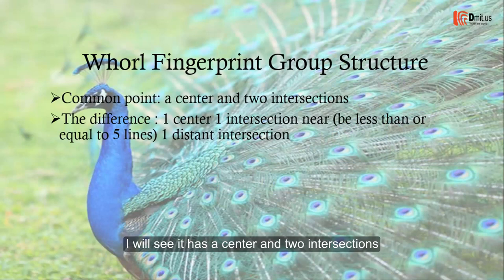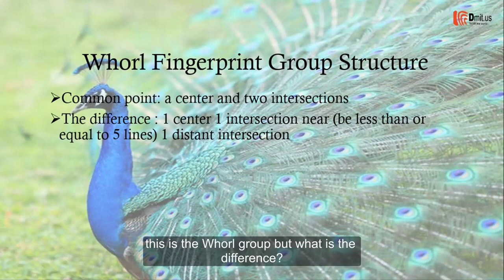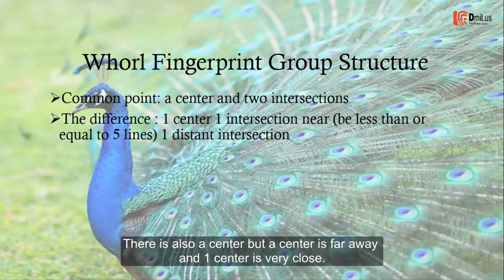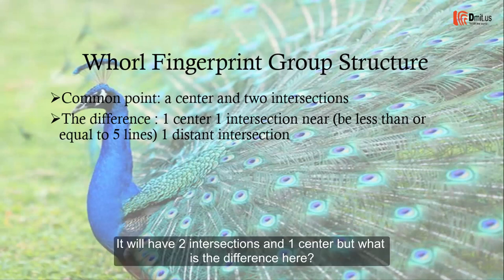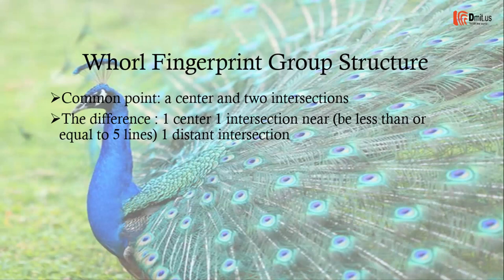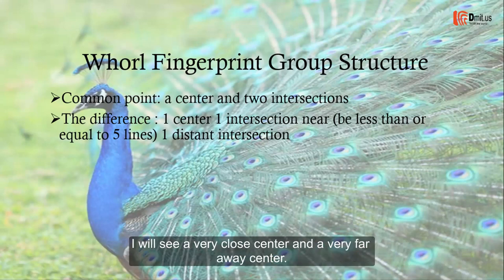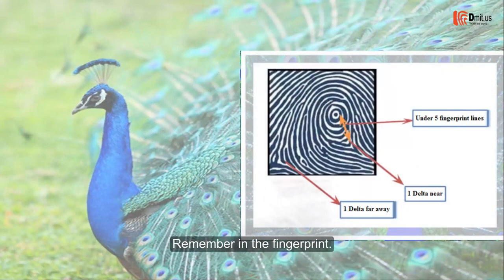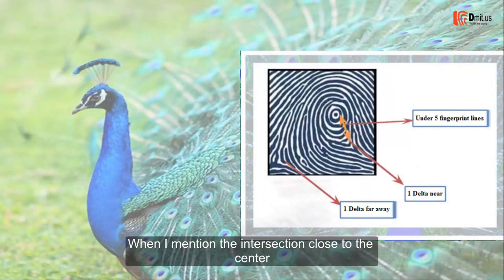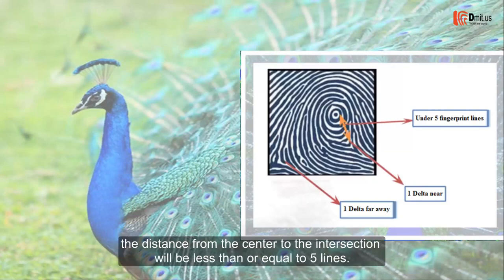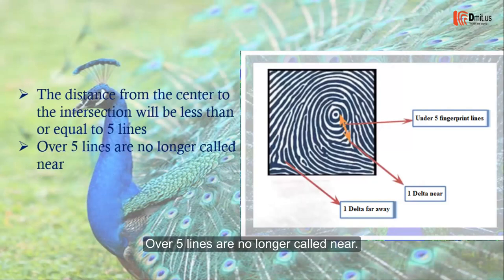It has a center and two intersections — this is the whorl group. But what is the difference? There is a center, but one center is far away and one center is very close. It will have two intersections and one center. These two intersection points will have a net point transition towards the very center. One is a very close center and one is a very far away center. Remember, in the fingerprint, the distance from the center to the intersection will be less than or equal to five lines; over five lines it will no longer qualify.